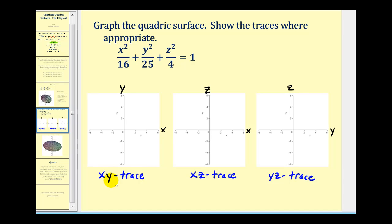So if we want to determine the xy trace, we're going to set z equal to zero, which will give us the equation x squared over 16 plus y squared over 25 is equal to one. And we know from our study of conic sections, this is an ellipse centered at the origin or the point zero, zero.